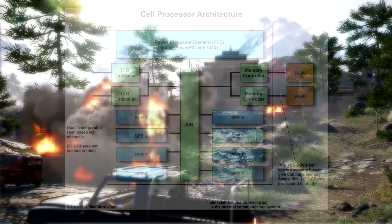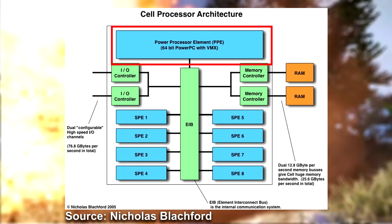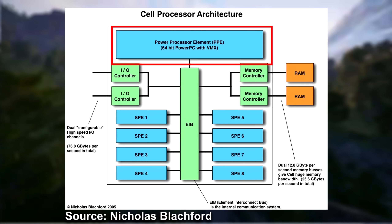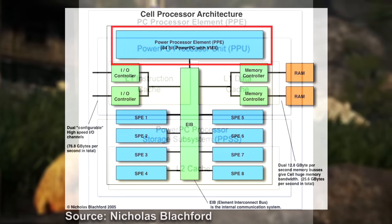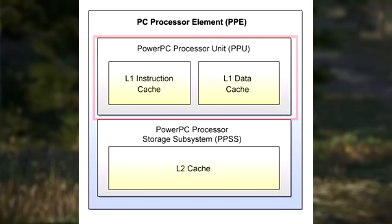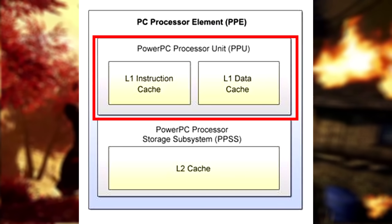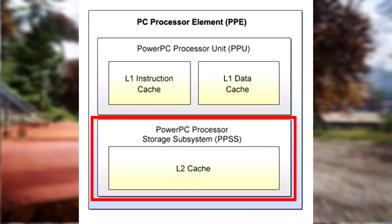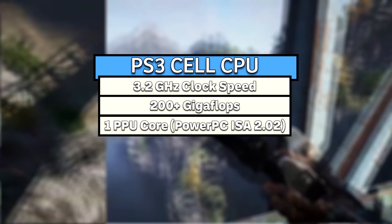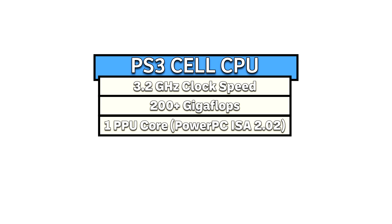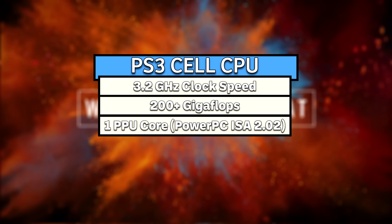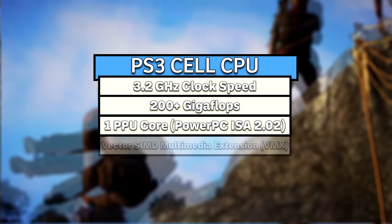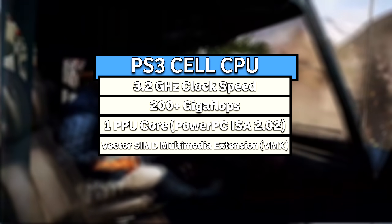At the heart of the Cell is the Power Processing Element, or PPE. You can think of this as the leader of the pack, handling general-purpose tasks and keeping the whole show coordinated. It's actually divided into two main parts: the PowerPC Processing Unit, or PPU, and the PowerPC Processor Storage Subsystem, or PPSS. The PPU is a solid 64-bit processor built on the PowerPC ISA version 2.02. It was souped up with vector-SIMD multimedia extensions, or VMX, which was IBM's implementation of advanced parallel number crunching technology.